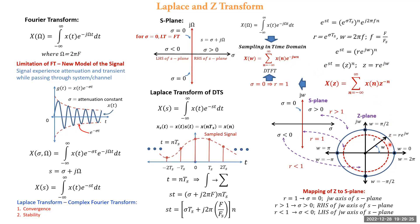The s-plane maps into the z-plane: σ = 0 maps to the unit circle, σ < 0 maps to the area inside the unit circle, and σ > 0 maps to the area outside the unit circle. This gives the interrelationship of Fourier transform, Laplace transform, and Z-transform. Since there is a concept of convergence and stability, we will see the constraints on the Laplace transform equations in the next lecture. When the Discrete-Time Fourier Transform is sampled in the frequency domain, the equation becomes the DFT, and the fast algorithm of the DFT becomes the FFT.